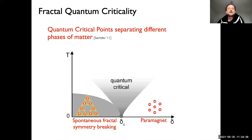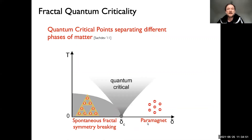The main question we were addressing is: if we tune a model that has spontaneous fractal symmetry breaking such that we cross a critical point to a paramagnetic phase, what are the properties of this quantum critical point? And first of all, whether there is actually quantum criticality — just trying to get some concrete idea about this question.